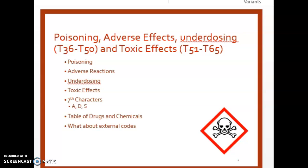Let me explain how this table works. The very left column — the larger part of the table — is the substance: what the patient took or was exposed to. Then we have columns across the top: Poisoning Accidental Unintentional, Poisoning Intentional Self-Harm, Poisoning Assault, and Poisoning Undetermined. The first four columns next to the substance are all for poisonings.